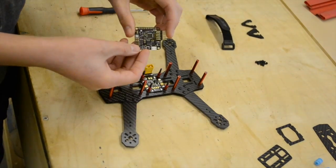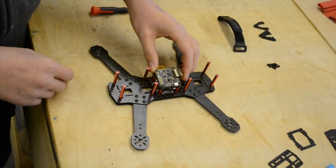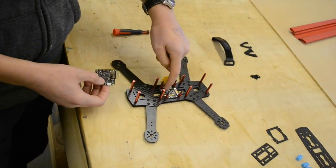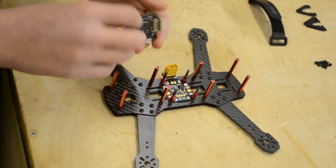The Naze32 here, it will go on the top bit here with lock nuts to hold it all down. But because I haven't soldered the ESCs onto these points here, I'm not going to do that bit yet. I'll do that in the next step, the electronics.